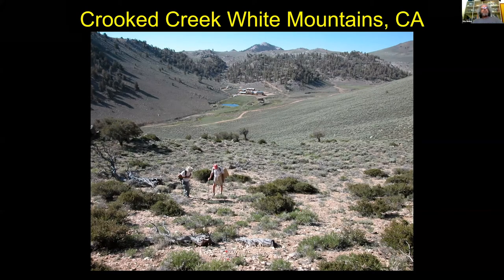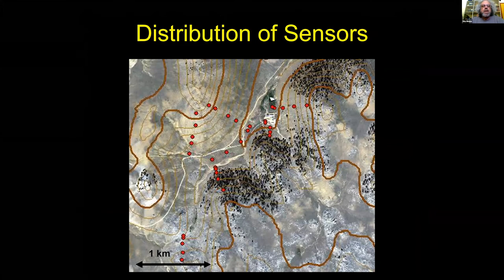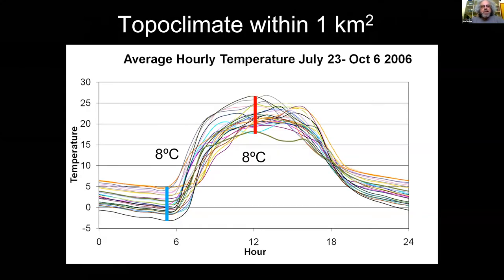Now we're going to go up to the White Mountains at Crooked Creek Station — a beautiful subalpine valley. We laid out temperature sensors on transects going up different aspects, almost to the ridgetops. The results show what I call organized spaghetti: at dawn there's about an eight degrees Celsius difference in average hourly temperature within a single square kilometer, and about the same range in the middle of the day, consistent from site to site.